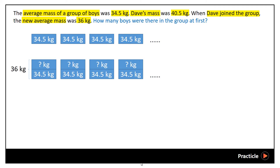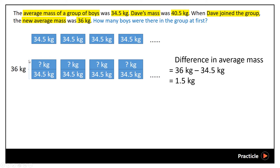In order to solve this question, we need to make use of what we know and work towards what we don't know. We know the original average mass of the group of boys — it's 34.5 — and we also know the new average mass. So the first thing we need to do is find the difference in the average mass. We do that by taking 36 minus 34.5, which gives us an answer of 1.5.